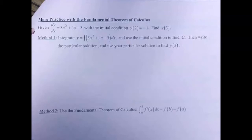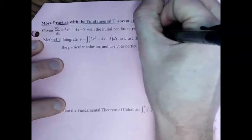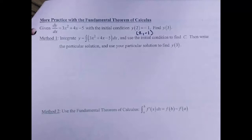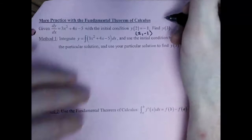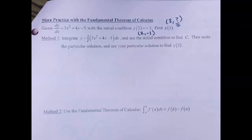Given the derivative dy/dx equals 3x² + 4x − 5, and the initial condition y(2) = −1 — which could also be written as the coordinate point (2, −1) — find y(3). So I know one x and its corresponding y value, and I'm trying to figure out the y value when x is 3.